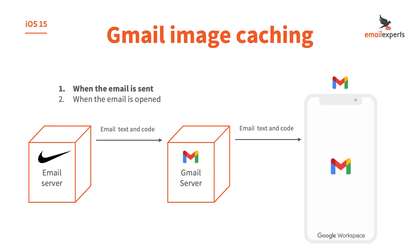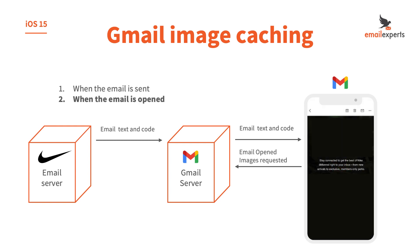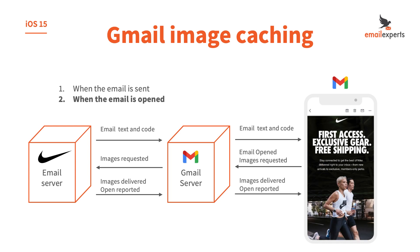When Nike sends the email, the text and the code of that email is sent to Gmail, which then sends the text and code to your app. When you open the email, initially you can only see the text without images. As you open, the app requests the images. The Gmail server then requests the images from the email server, which sends the images back and that reports the open. Gmail then sends the images back to your phone, all usually in less than two seconds. Gmail hides the device information, so the email server can see when the email was opened, but doesn't know which device it was opened on.